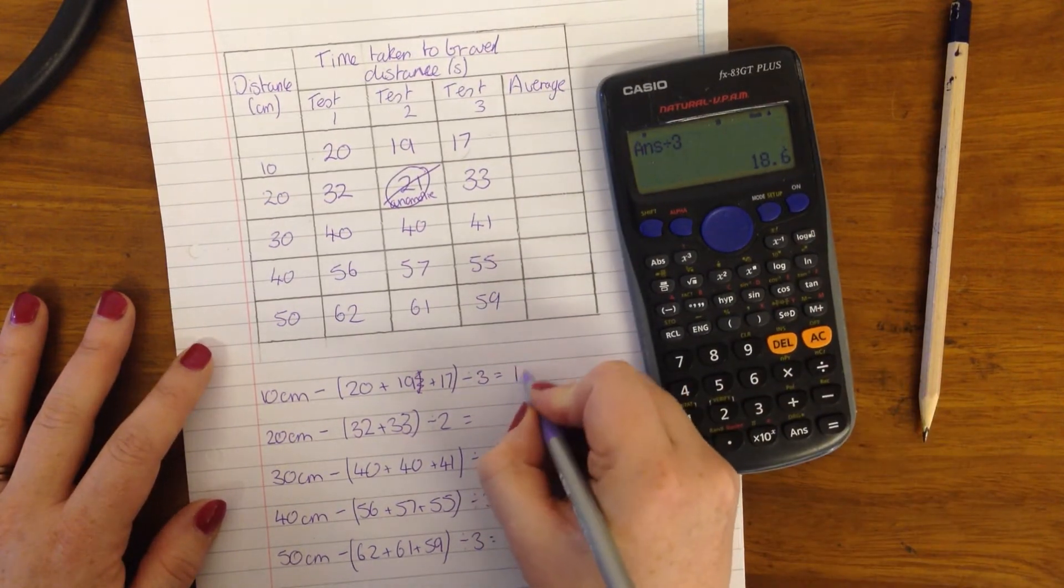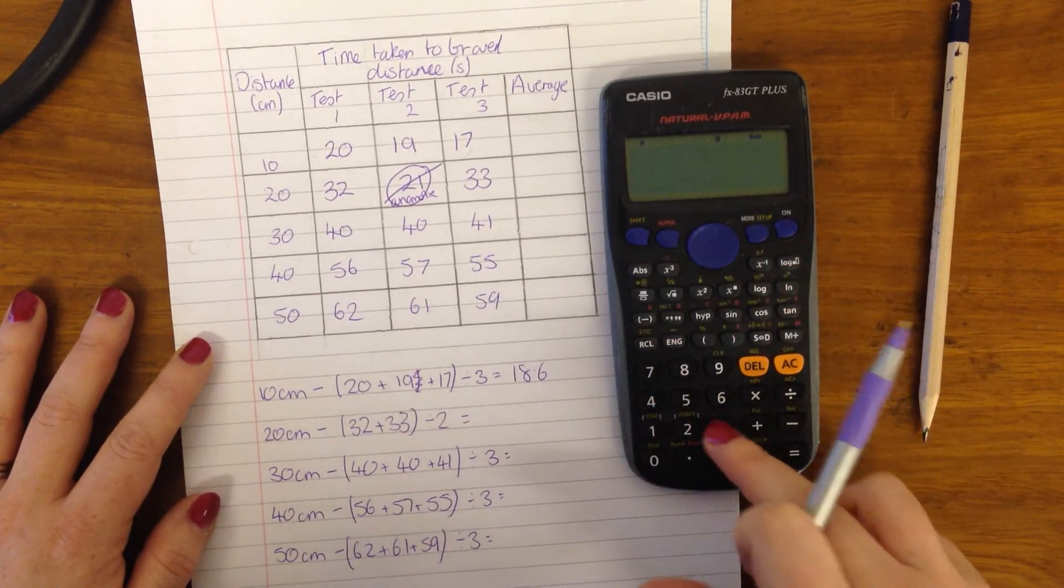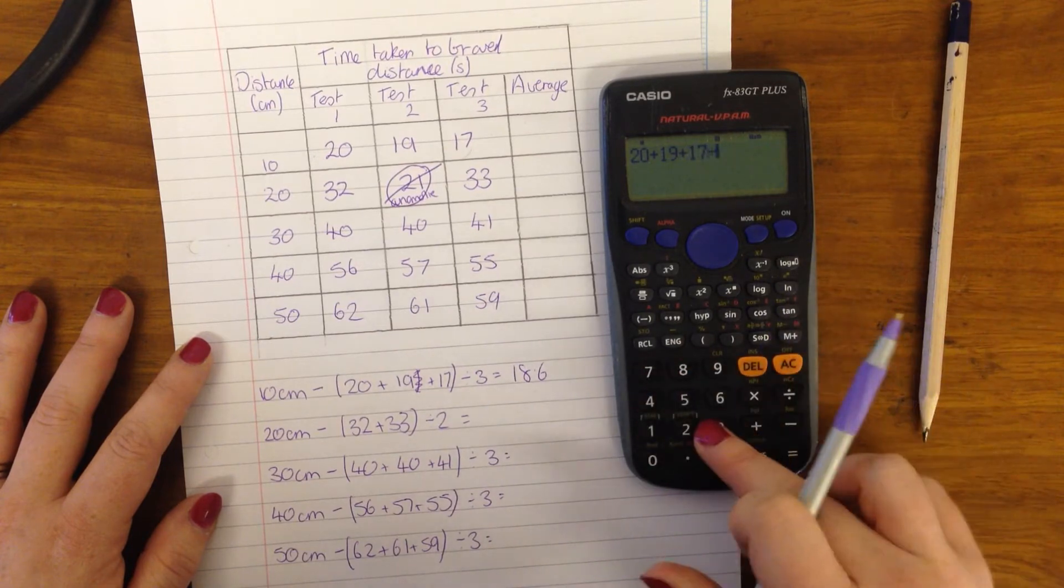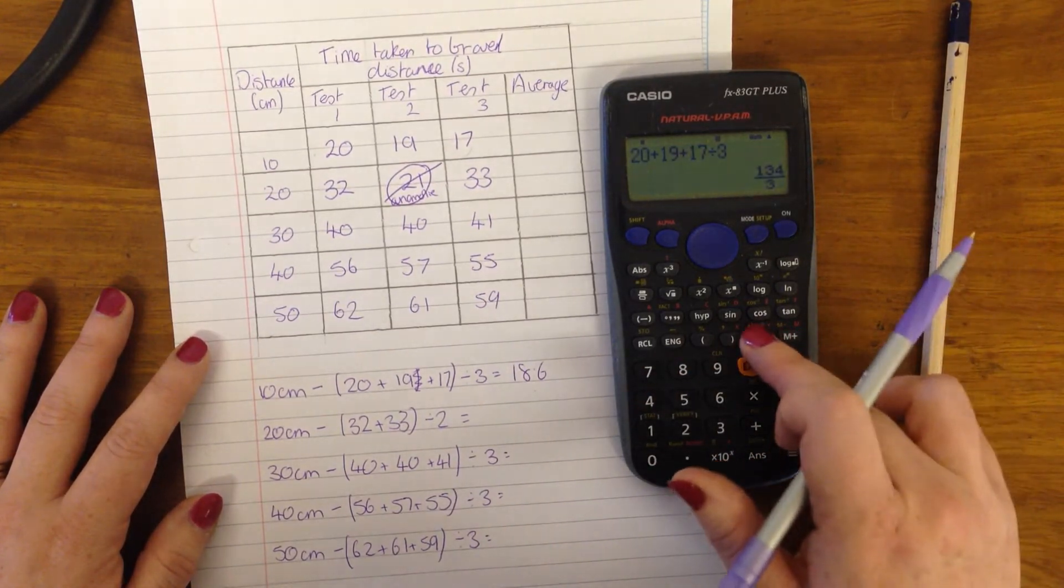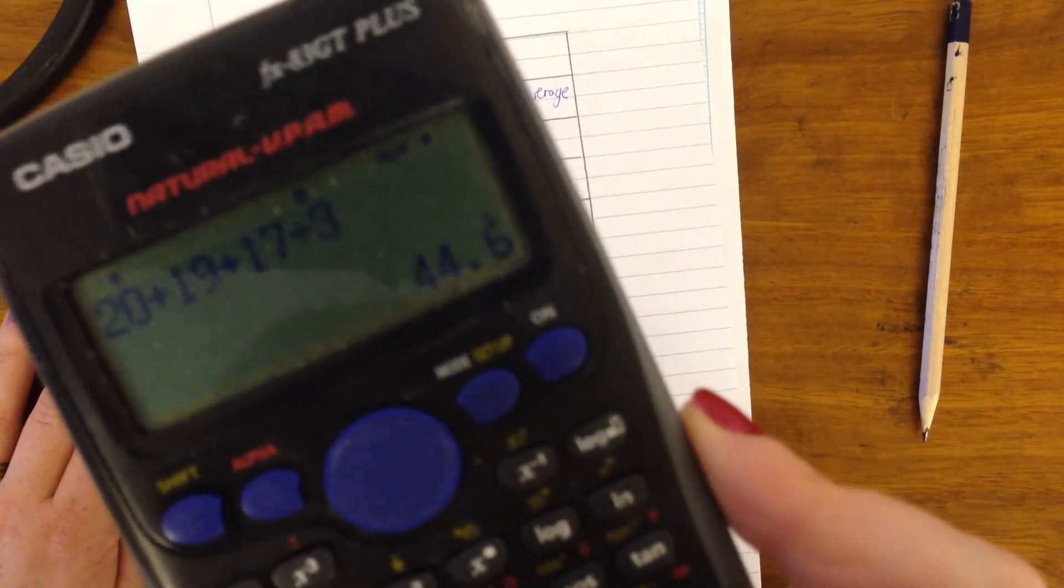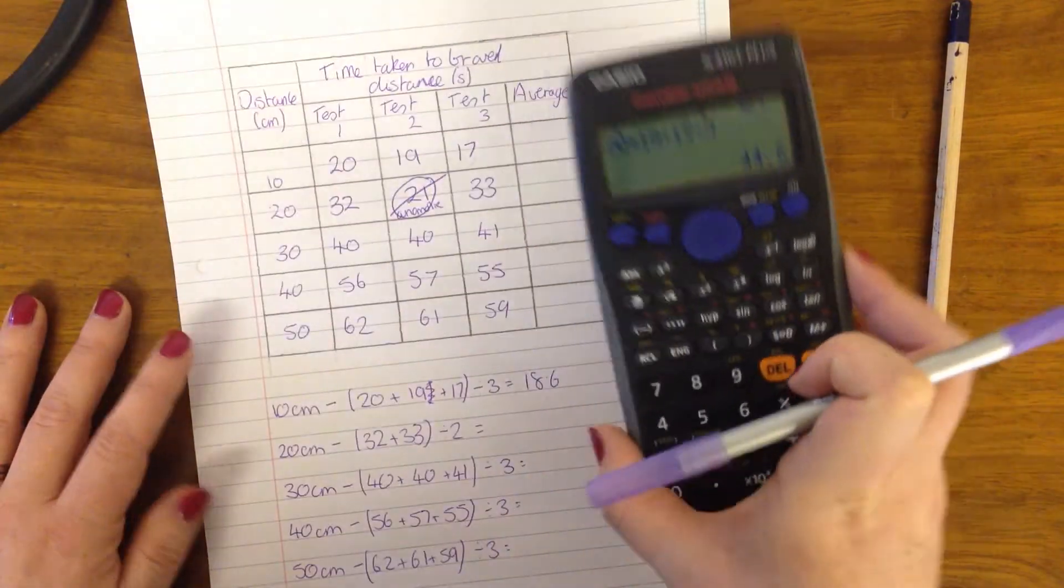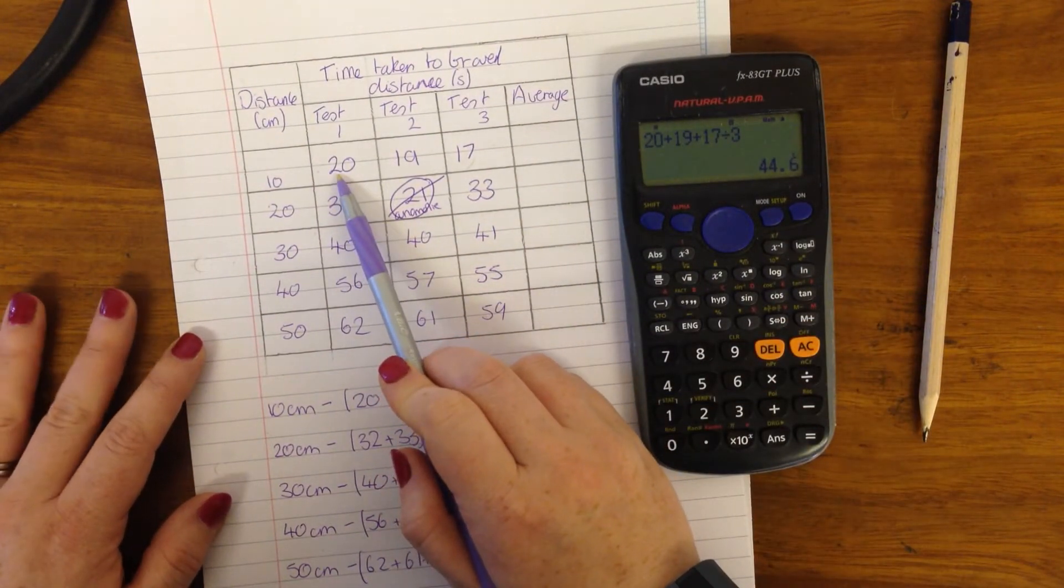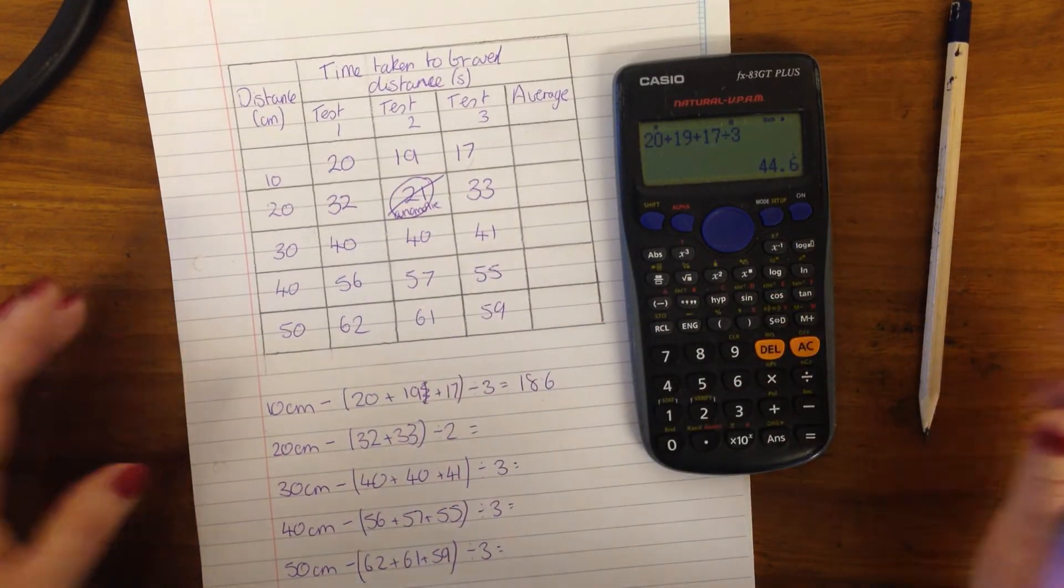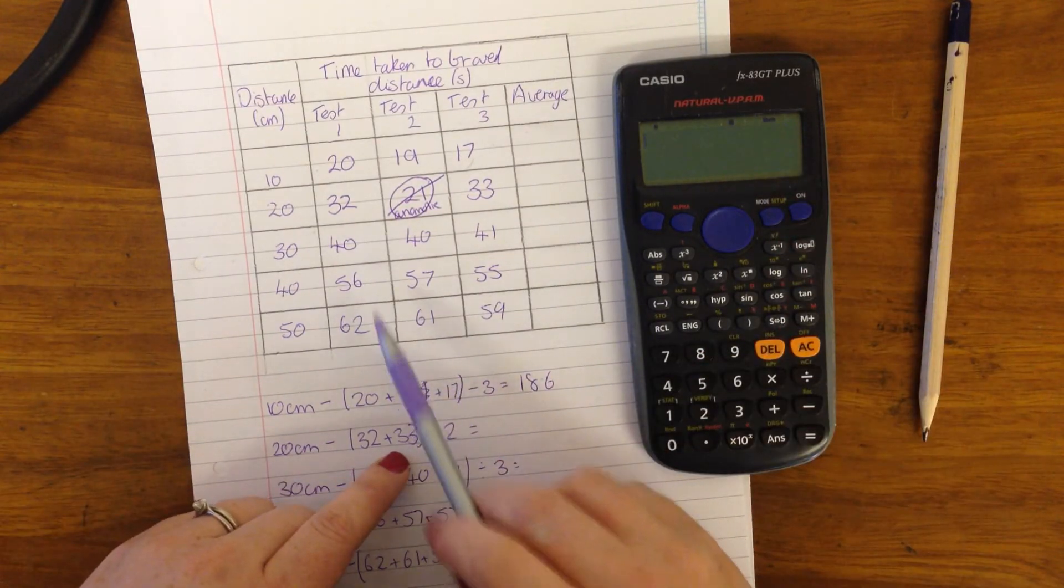So that you get the accurate number. Sometimes if you do 20 plus 19 plus 17 divided by 3, you might get a different number, which is quite clearly wrong. If you can't see that, that is coming up at 44.6. And you can see that 44.6 is well away from 20, 19 or 17. Obviously doesn't fit in with the trend, so shouldn't be in that place.